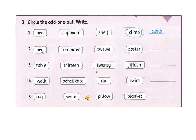Khoanh tròn một từ khác loại rồi viết theo mẫu. Chúng mình cùng nhau kiểm tra bài làm. (Circle the odd word out and write it following the example. Let's check our answers together.)